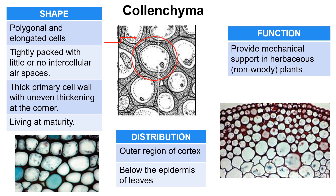Collenchyma consists of polygonal and elongated cells which are tightly packed together with little or no intercellular air spaces. The primary cell wall is thick with uneven thickening at the corners. It is still living when it reaches maturity. It is found distributed at the outer region of cortex and below the epidermis of leaves. Collenchyma is responsible for providing mechanical support in herbaceous or non-woody plants.